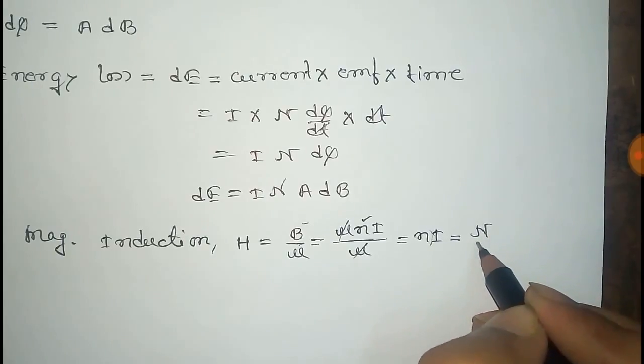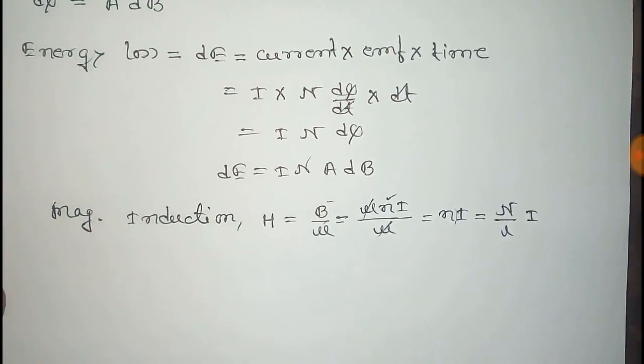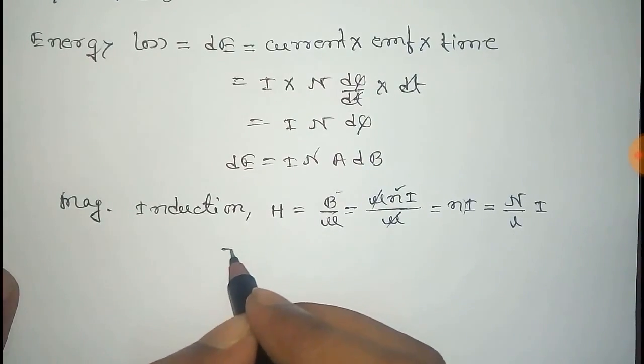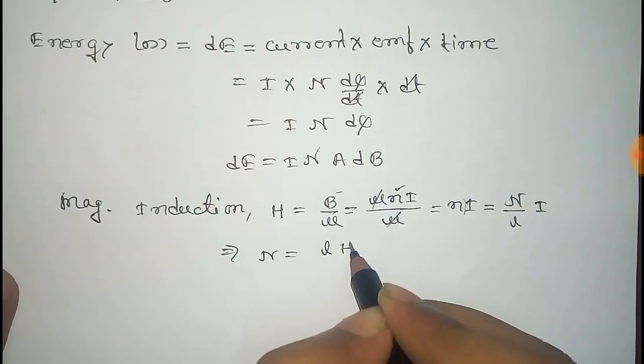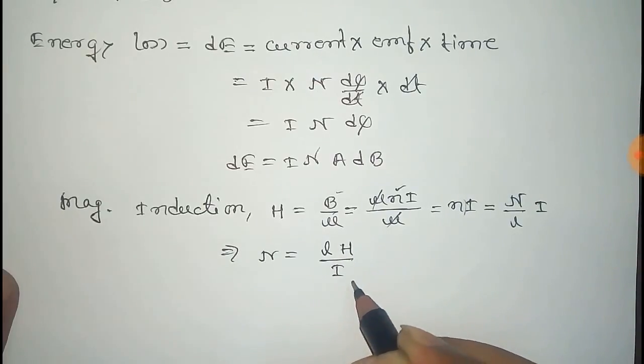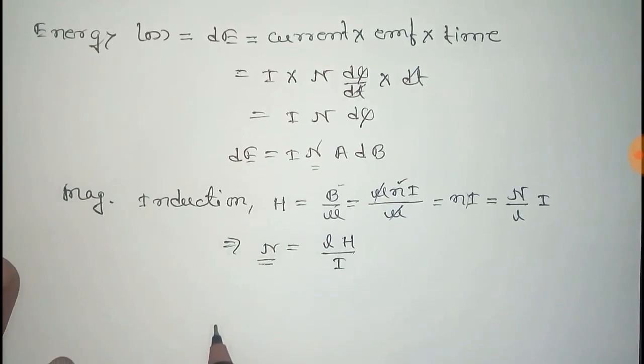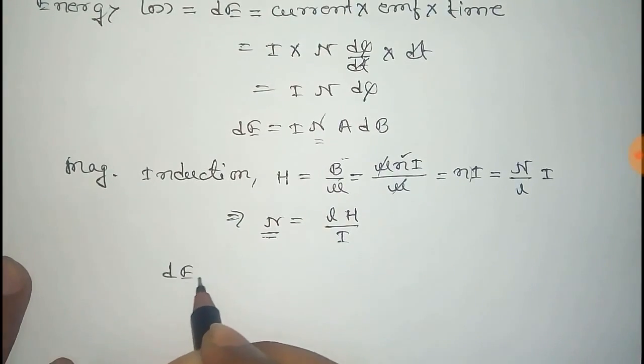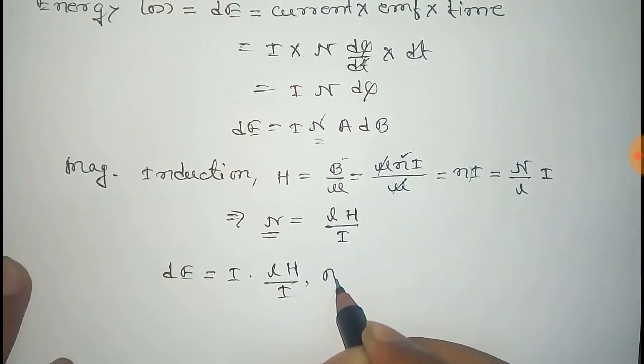And N can be written as total number of turns per unit length, that is N by L into I. Now from this we get N equals L H by I. Now we have to put this value of N in there.